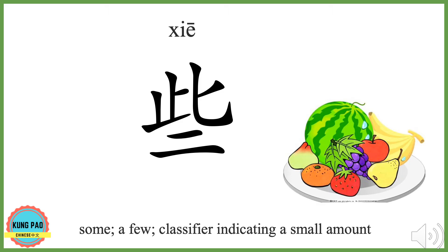一些 means some, a few. 一些 is also a classifier indicating a small amount.